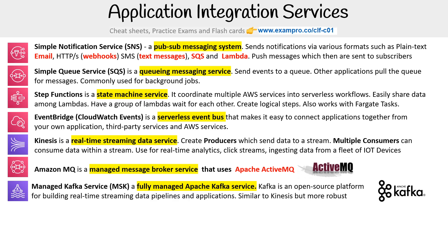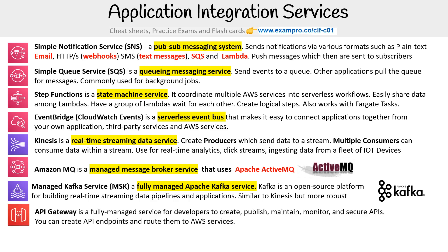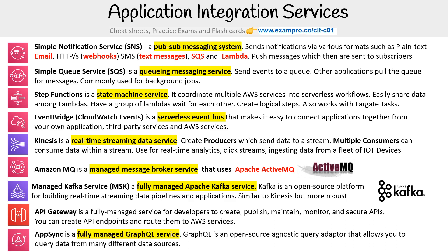MSK is a fully managed Apache Kafka service. Kafka is an open source platform for building real-time streaming data pipelines and applications, similar to Kinesis but more robust and very popular. We have API Gateway — a fully managed service for developers to create, publish, maintain, monitor, and secure APIs. You can create API endpoints and route them to AWS services.